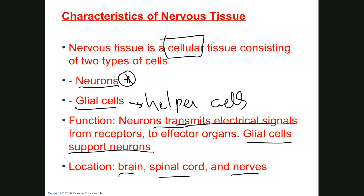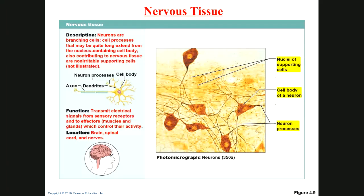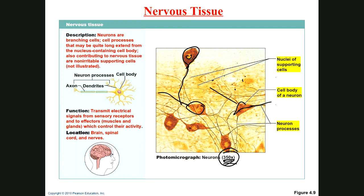Looking at the picture — neurons are humongous cells. The little dots are the glial cells, which are tiny. Note the magnification is 350x — much lower than other tissues, yet neurons are still huge. The cells typically have long appendages; we'll cover the names in a later chapter. When it comes to nervous tissue, know the names of the cells — neurons and glial cells — and know the location.